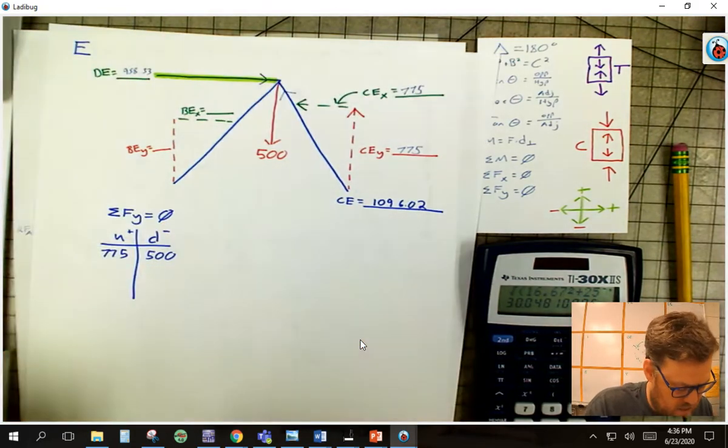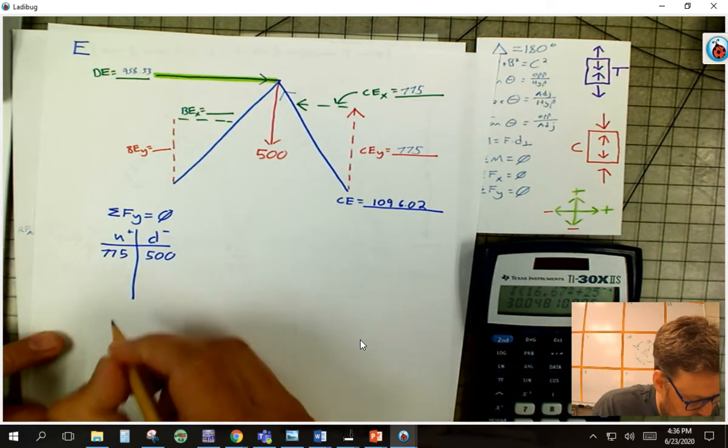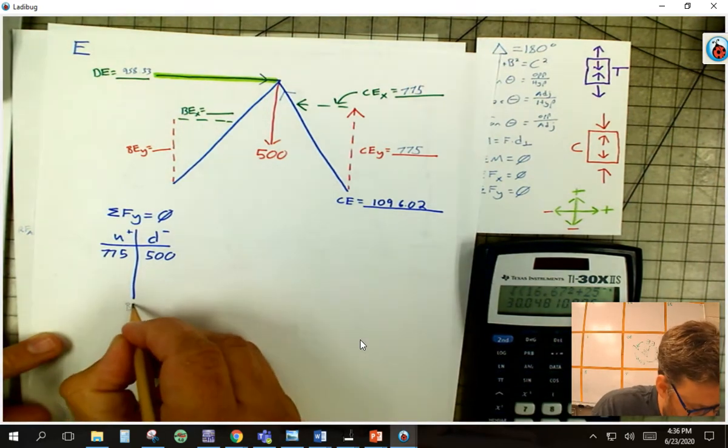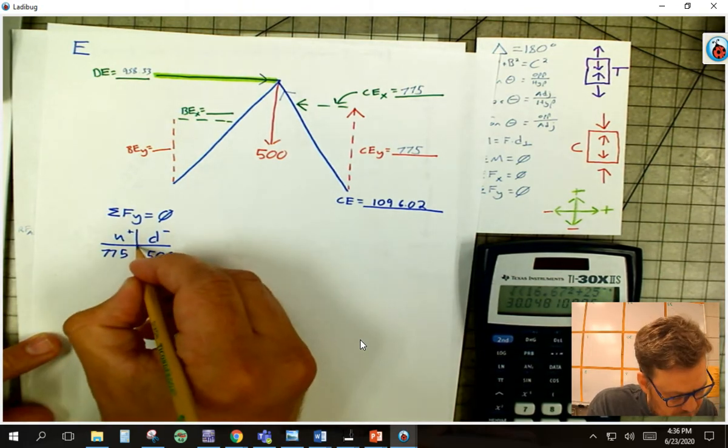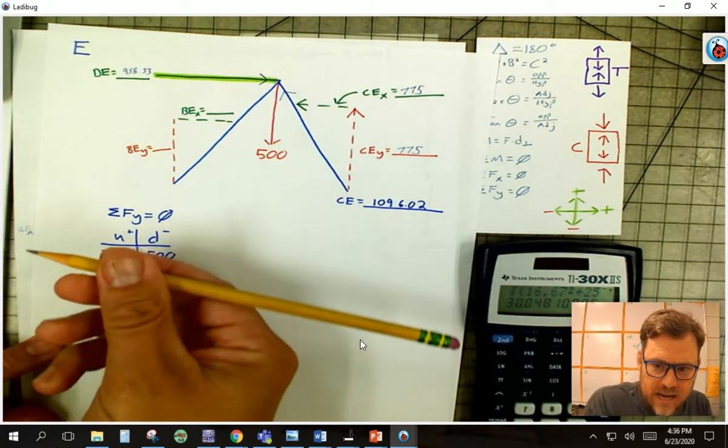I have one thing left, BE in the Y. Remember, I come down here, and I kind of park it, and I say, which side is BEY? This, remember, is my fulcrum, my teeter-totter. Got to jump on there.